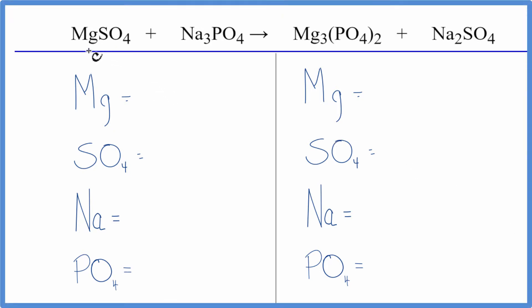To balance this equation, we have magnesium sulfate plus sodium phosphate. This is a double displacement reaction where the sodium and the magnesium switch places.